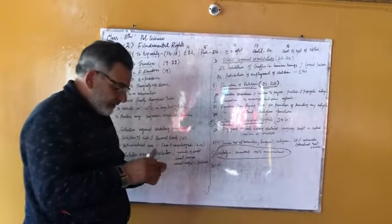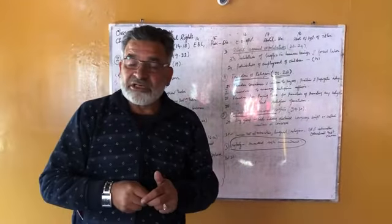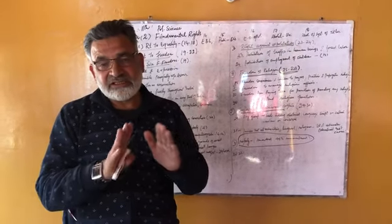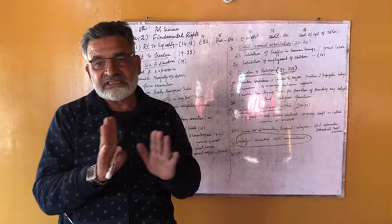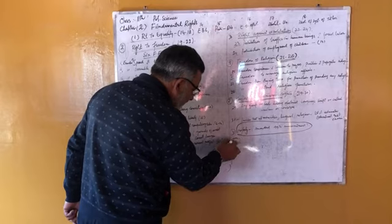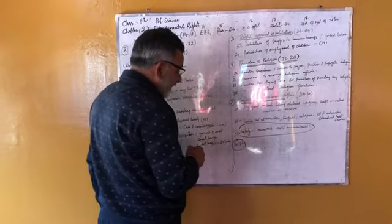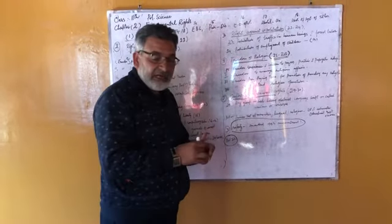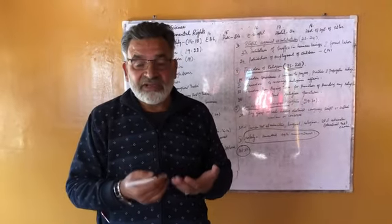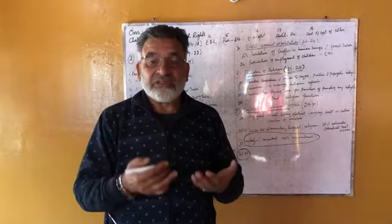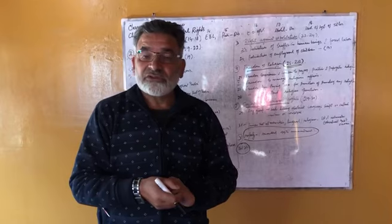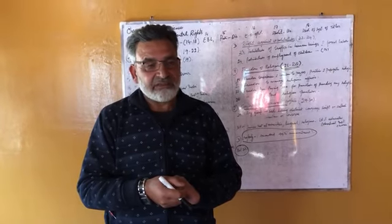Article 31 was amended under the 44th Constitutional Amendment, under which the right to property has been made a legal right rather than a fundamental right. It is no longer counted among the fundamental rights. Likewise, under Article 32 we have certain provisions to protect ourselves and seek help from the judiciary, and this topic we will take up tomorrow. Goodbye.